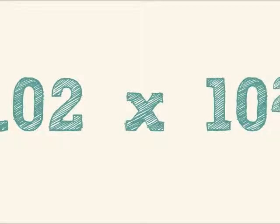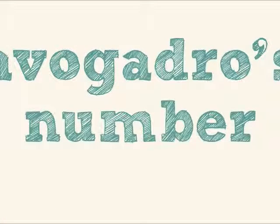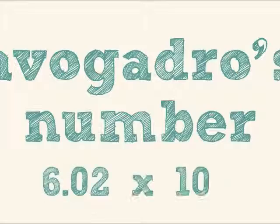This number is 6.02 times 10 to the 23rd power. That's 602 with 21 zeros after it. Crap, that's big. It's also called Avogadro's number, named after the scientist Amadeo Avogadro. And I know it sounds like avocado, but that's not his name. Avogadro's number is still just 6.02 times 10 to the 23rd power.